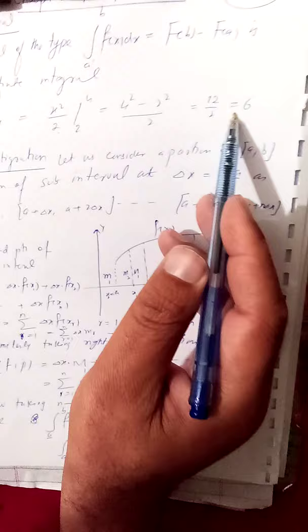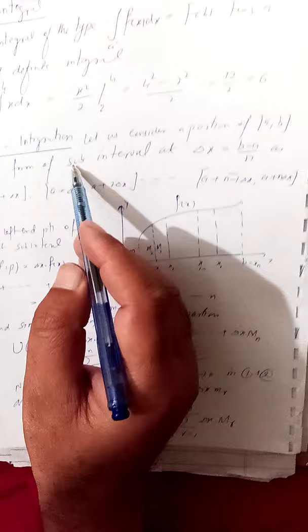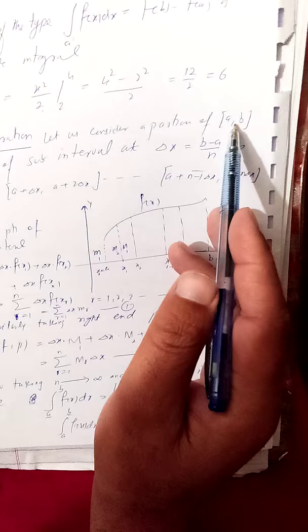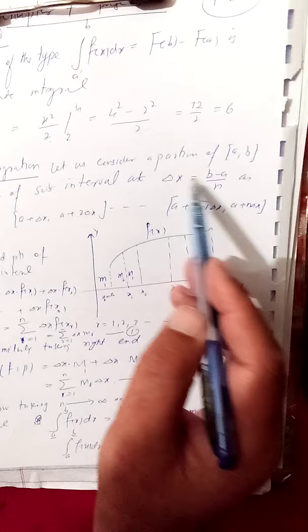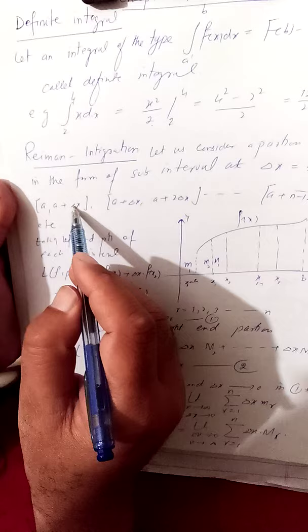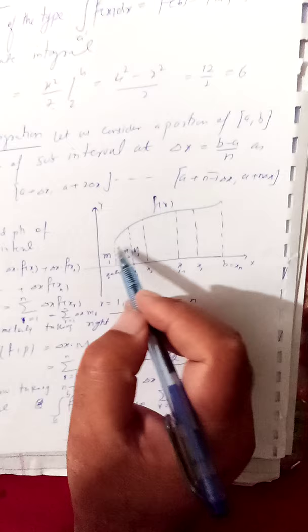Now, Riemann integration. Riemann defined a famous theory of Riemann integration. Consider an enclosed interval [a, b] and we take a partition of this interval by dividing: delta x equals b minus a divided by n. Consider the partition as: a, a plus delta x, a plus delta x, a plus 2 delta x, and so on. Consider this curve in the closed interval [a, b] and we divide this area under the curve